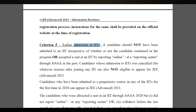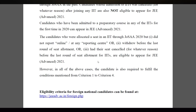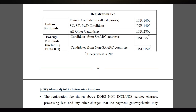Those who got admission in IITs and then cancelled are also not eligible. Dates for JEE Advanced 2021 are not yet released, but the registration fee is set: for Indian national females and SC/ST/PWD candidates it is ₹1,400, and all other category candidates will pay ₹2,800. For foreign students, candidates from SAARC countries pay USD 75 and candidates from non-SAARC countries pay USD 150.